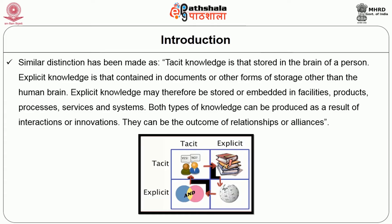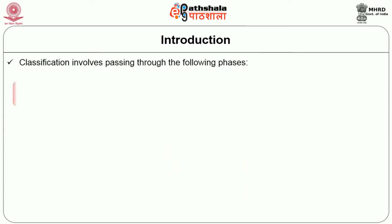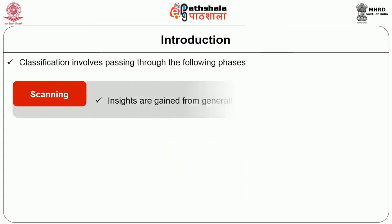Explicit knowledge may therefore be stored or embedded in facilities, products, processes, services, and systems. Both types of knowledge can be produced as a result of interactions or innovation. They can be the outcome of relationships or alliances. This classification involves passing through the following phases.